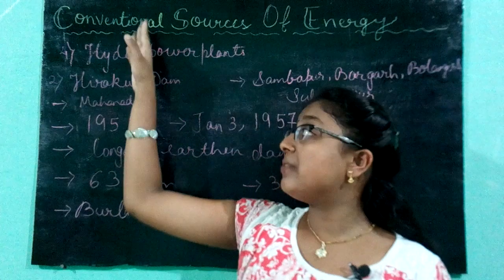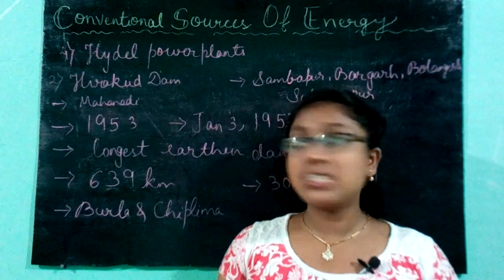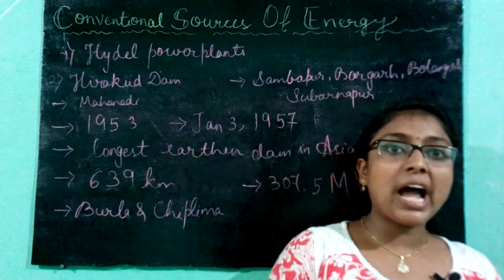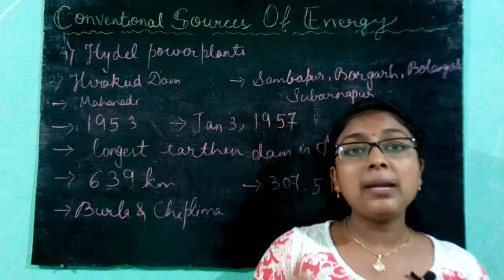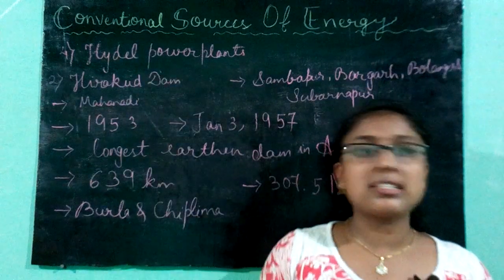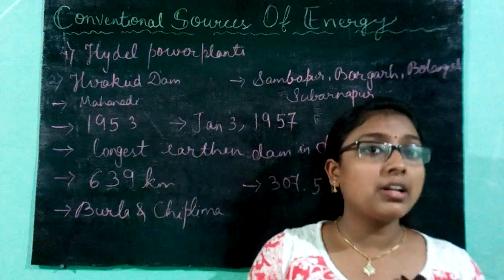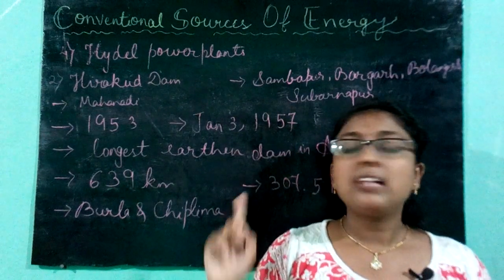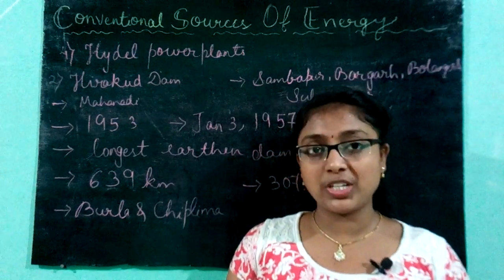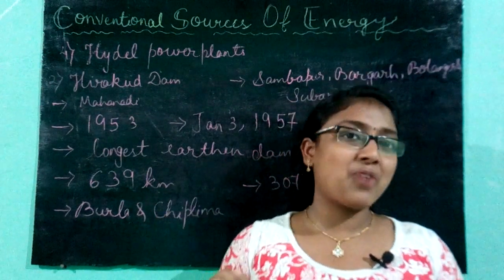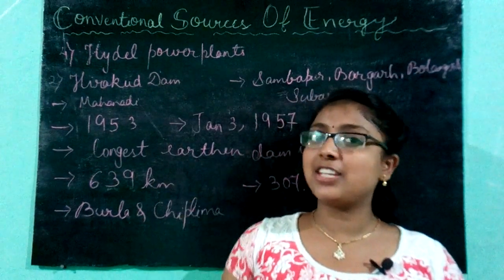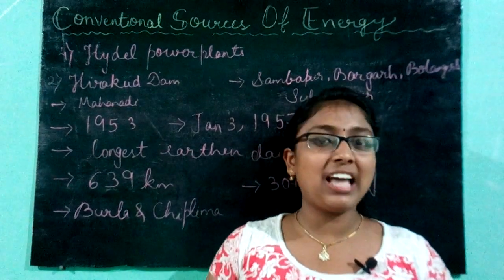Here we complete the chapter on conventional sources of energy. In this video, we discussed hydel power plants. Part 1 covered coal, part 2 covered petroleum, part 3 covered natural gas, and this is part 4 on hydel power plants. There will be one more video on this chapter covering past year questions. Thank you for watching till the end — you can see all the videos of Door to Study in my playlist, ICSE Geography Class 10. Bye bye.